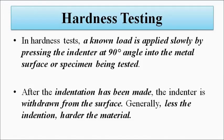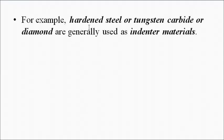After the indent is made, the indenter is withdrawn, and depending on the depth of indentation — how much indentation has occurred — the hardness is judged. The more the indentation, the less hard the material; the less the indentation, the harder the material. Generally, the indenter materials used are hardened steel, tungsten carbide, or diamond.